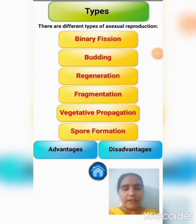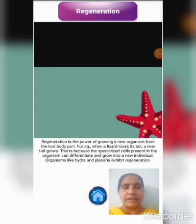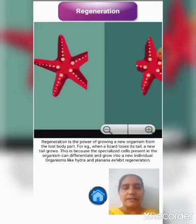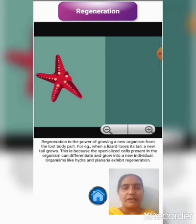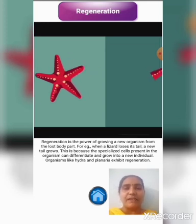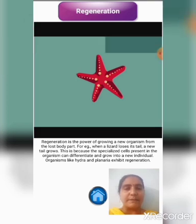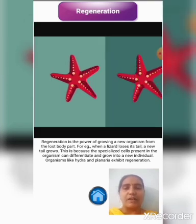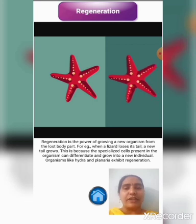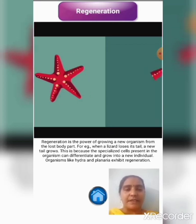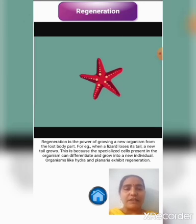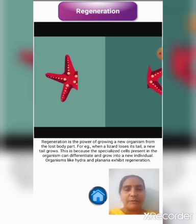Now, let us see another type of asexual reproduction: regeneration. Regeneration is the power of growing a new organism from a lost body part. For example, when a lizard loses its tail, a new tail grows. This is because specialized cells present in the organism can differentiate and grow into a new individual. In this video, you are observing a starfish which is growing into full size from its lost body part.